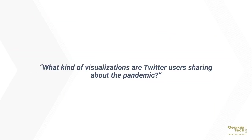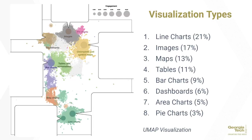What kind of visualizations are Twitter users sharing about the pandemic? With image classification, the researchers were able to classify all visualizations into different types. Eight main types were identified: line charts, images, maps, tables, bar charts, dashboards, area charts, and pie charts. These were then displayed in a UMAP visualization clustered using k-means.